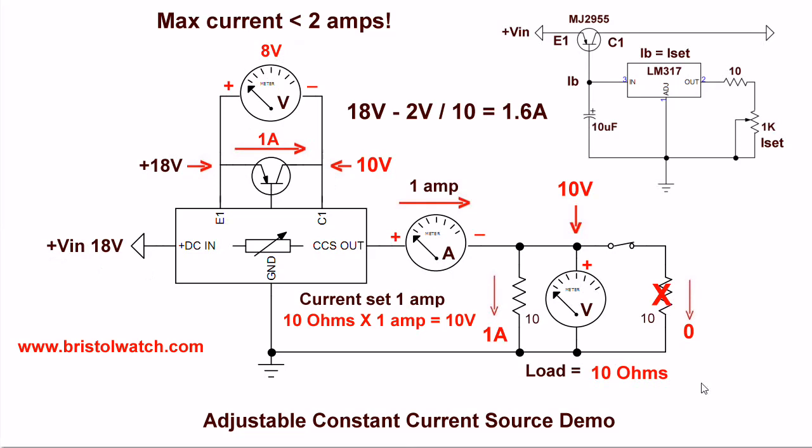But now we come to a problem. I have a load of 10 ohms. 1 amp gives me 10 volts. Can I, with an 18 volt supply, can I adjust this thing to do 2 and 3 amps like I did earlier? The answer is no. If I set the constant current source for 2 amps, well 2 amps times 10 ohms is 20 volts, I just exceeded the voltage of the input. The load voltage has to be a couple of volts lower than the constant current source input voltage.